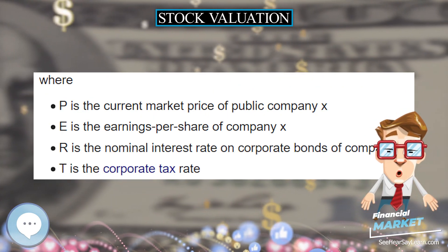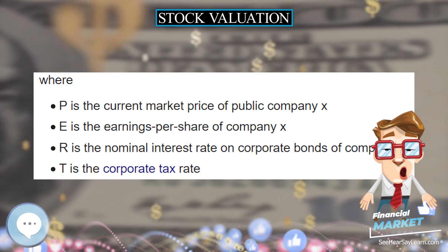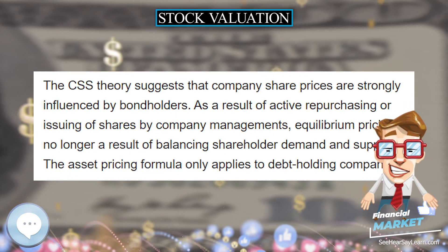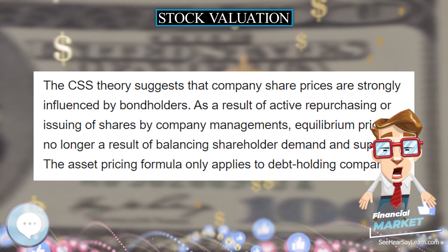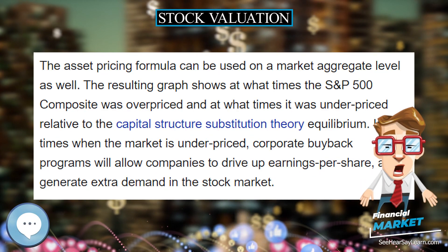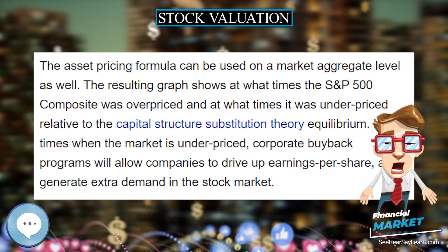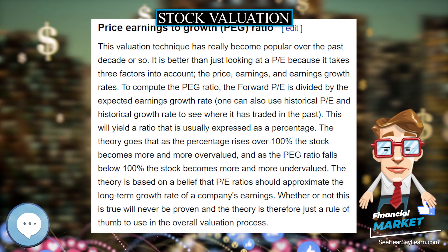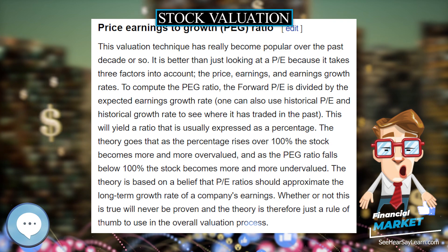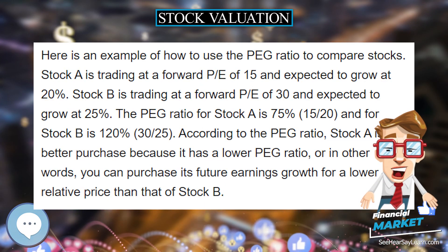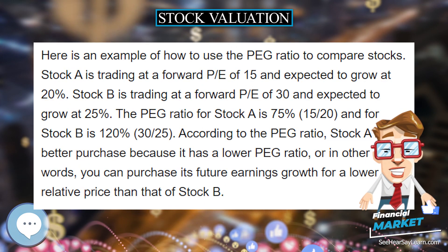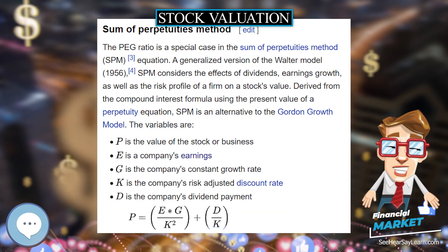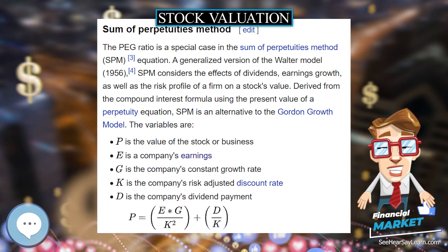Constant Growth Approximation. The Gordon model, or Gordon's growth model, is the best known of a class of discounted dividend models. It assumes that dividends will increase at a constant growth rate, less than the discount rate, forever. The valuation is given by the formula, and the following table defines each symbol. Dividend growth rate is not known, but earnings growth may be used in its place, assuming that the payout ratio is constant.